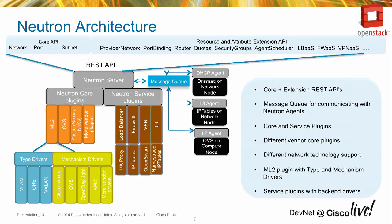Type drivers within ML2 represent the underlying network technology used to provision the network — this could be VLAN, VXLAN, or GRE. VLAN versus overlays depends on your requirements: if it's a multi-tenant cloud needing more than 4K tenants, you might want to consider VXLAN. These are all configurable knobs within the OpenStack environment to bring up your cloud.